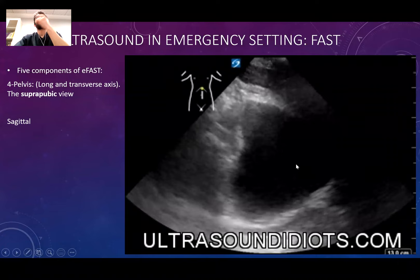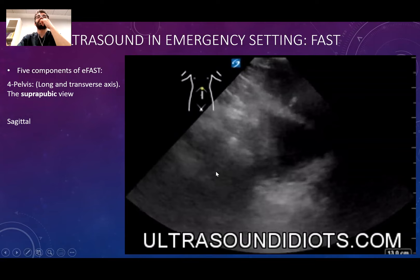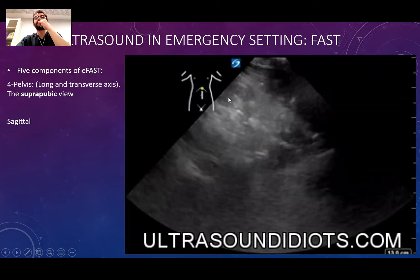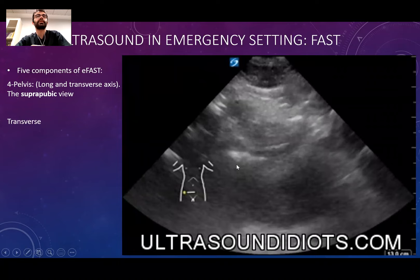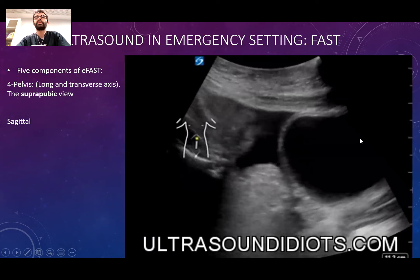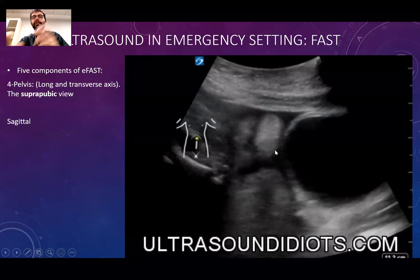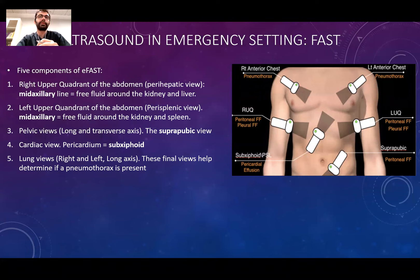When we check the bladder, it normally looks like a dark round structure. On top of the bladder there are bowel walls, and around them there should be no fluid — less than one centimeter is acceptable. When there is free fluid in the pelvic cavity, the bowels start to swim inside it. These were the five EFAST areas — this can make a very good exam question.